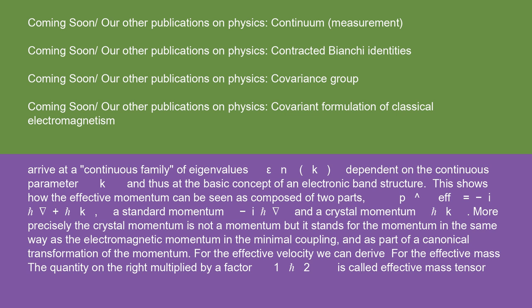This shows how the effective momentum can be seen as composed of two parts: p_eff = -iħ∇ + ħk, a standard momentum -iħ∇, and a crystal momentum ħk. More precisely, the crystal momentum is not a momentum, but it stands for the momentum in the same way as the electromagnetic momentum in the minimal coupling and as part of a canonical transformation of the momentum.